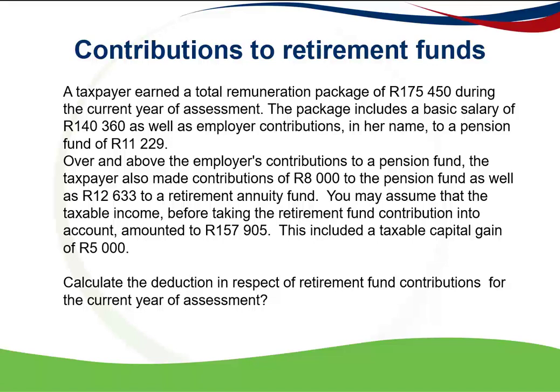The taxpayer earned a remuneration package during the current year of assessment. The package includes a basic salary as well as employer contributions in her name to a pension fund. Over and above the employer's contributions, the taxpayer also made their own contributions and contributed to a retirement annuity fund. You can assume that the taxable income before taking the retirement fund contributions into account amounted to R157,905, which included a taxable capital gain of R5,000.